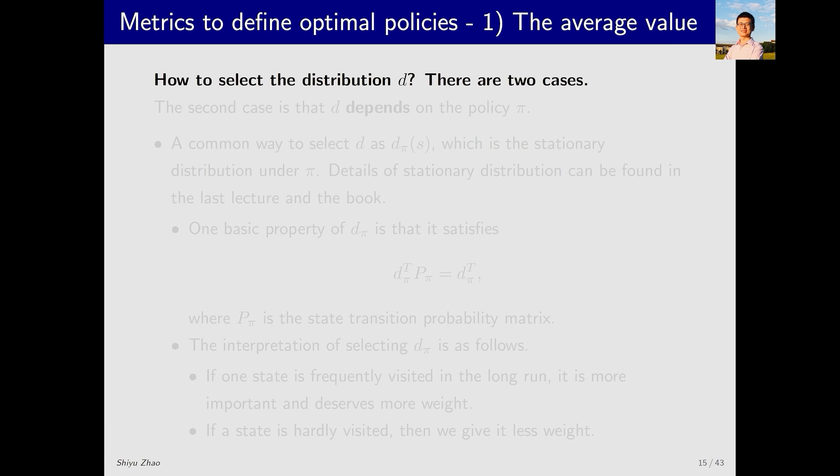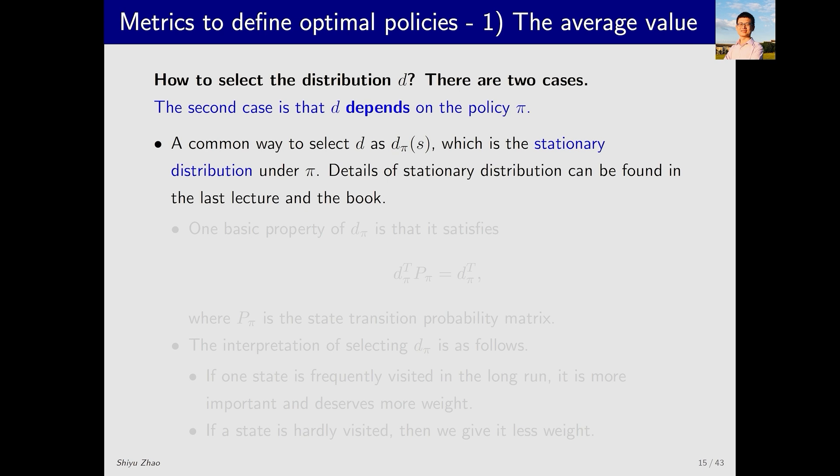What we discussed just now is the case when d and π are independent. Now let's consider an important case where d depends on the policy π. Here we select d as dπ(s), which is the stationary distribution. You might be familiar with dπ and stationary distribution, because we discussed them in detail in the previous chapter on value function methods.